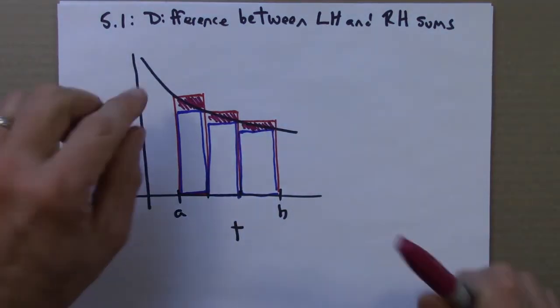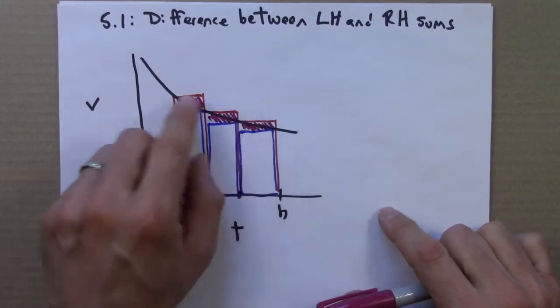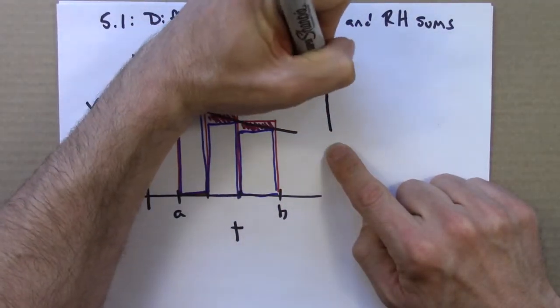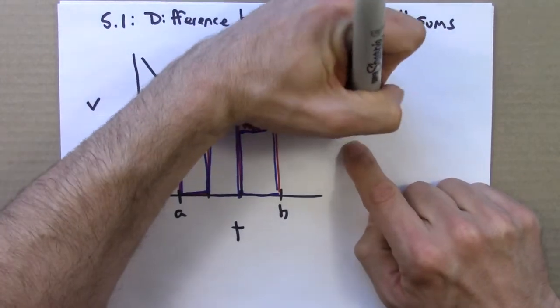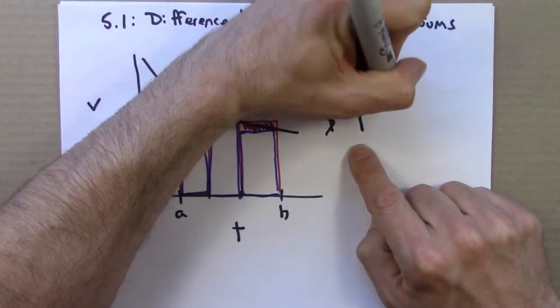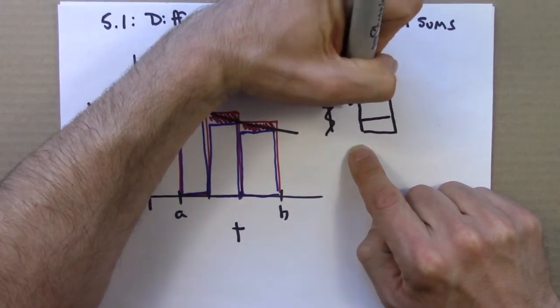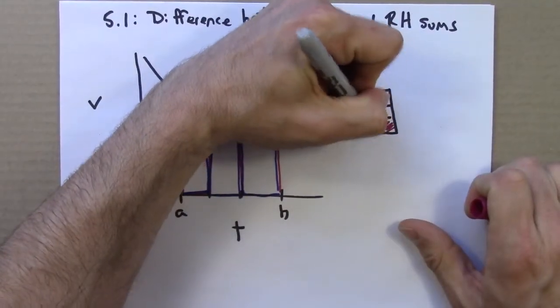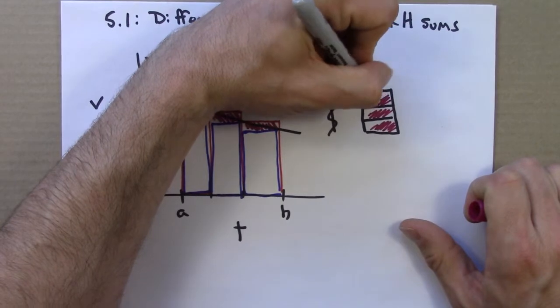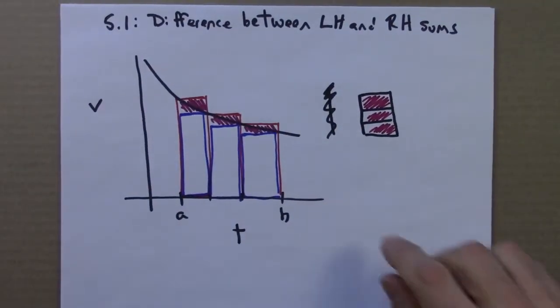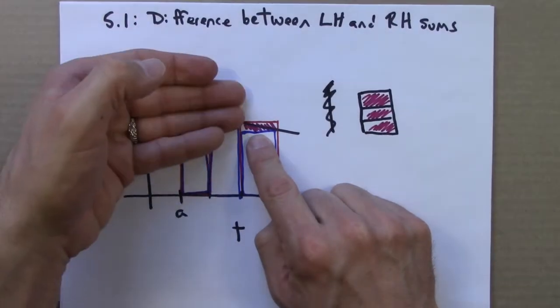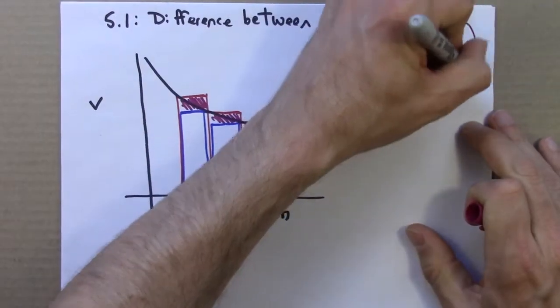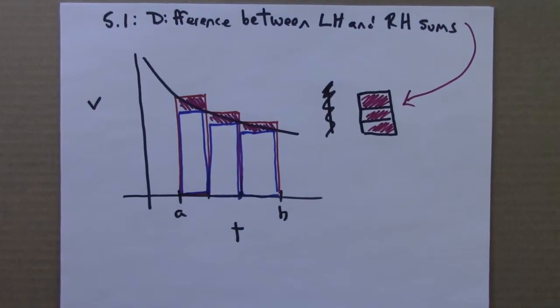So now I'm going to imagine stacking those areas on top of each other and sort of moving them to the right over here. Let me attempt to draw that. Oh, I messed up already. Let me attempt again to draw that. Yeah, that looks a little better. So the idea is I take these three rectangles, slide them on top of each other, and put them over there. So this funny shape here, these three rectangles, well, that is the difference between the left-hand sum and the right-hand sum.